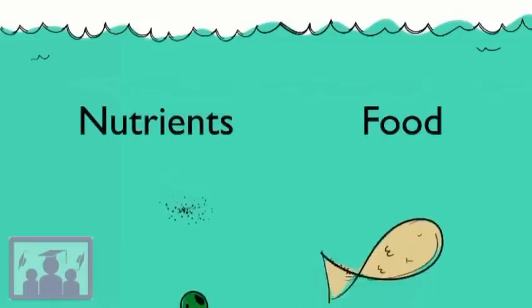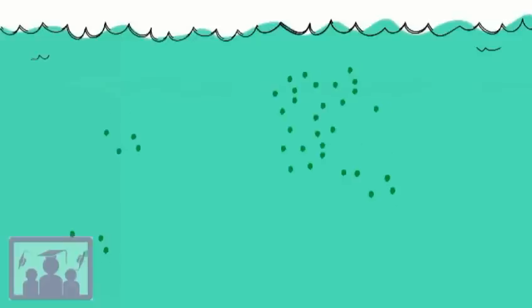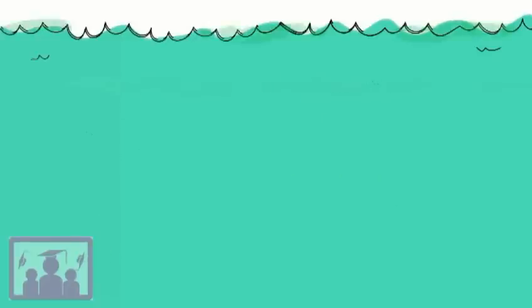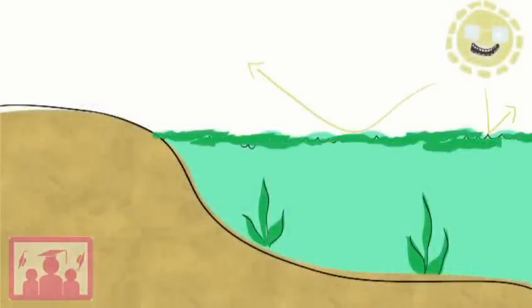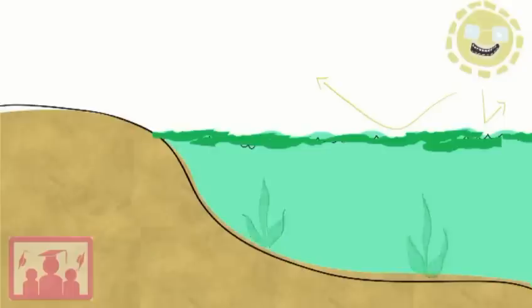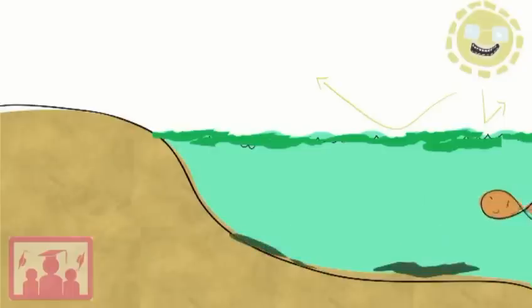The nutrients are food for algae, and the algae grow and reproduce quickly, forming a thick green bloom in the water. This algal bloom will absorb sunlight shining on the water, so the sunlight can't reach the bottom. Plants that need this light to photosynthesize will die. The algae will also start to die when they eat up all the nutrients and run out of food.